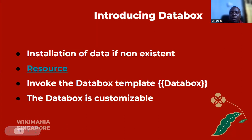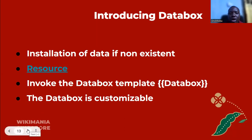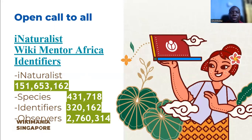DataBox is simple to install on any language Wikipedia. There are very simple steps to install the DataBox — if you click on the resources, you will find other resources. First, create or import the template, import the module, and you are good to go. There is a video tutorial under the resources to guide you through. We need everybody on board — come be an iNaturalist today, and we further invite you to join Wikimedia Africa where we pair up talents and share knowledge.